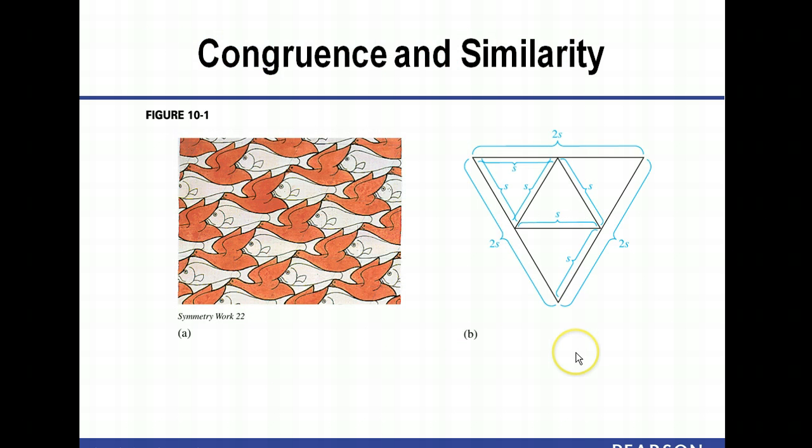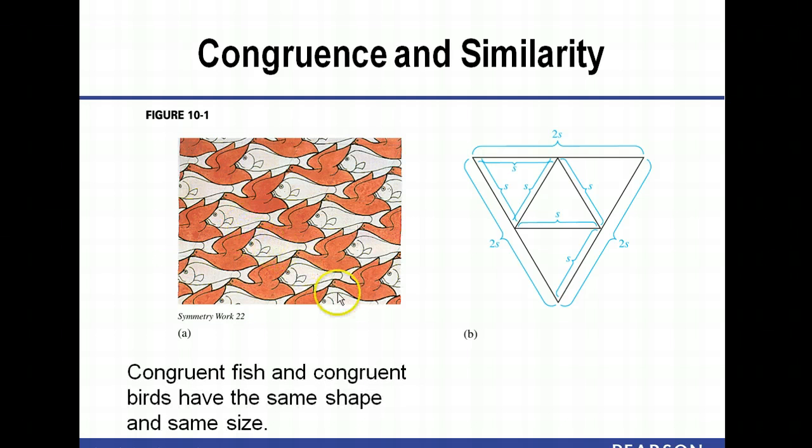But the first thing we're going to work with is congruence and similarity. So this is actually an example of what's called a tessellation. It's pretty cool. You may have seen these before. The idea here is that there are congruent fish and congruent birds. I use the word congruent because we've used this with our geometry in the last chapter and we're going to continue to use this word here.